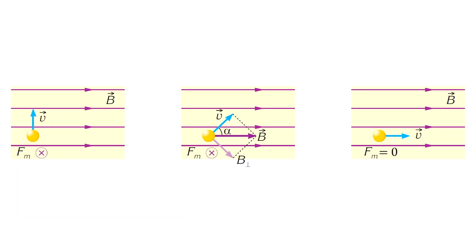Let's go back to the three situations. We know that when velocity and magnetic field are perpendicular, the charged particle performs circular motion. We also know that when velocity and magnetic field are parallel, the charge has linear motion. Finally, we need to understand what type of motion a charged particle performs when it enters the magnetic field at an angle.